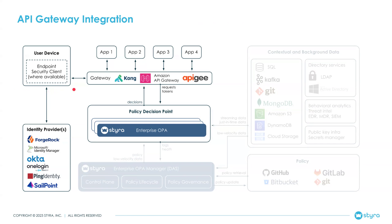When a user accesses an app or API, it starts with authenticating with an identity provider. Then the request goes to the API gateway. The gateway consults the policy decision point on what to do. The policy decision point uses your authorization permission policy to decide whether the request should be allowed or denied, and the gateway will forward the request to the appropriate endpoint or deny the request outright.